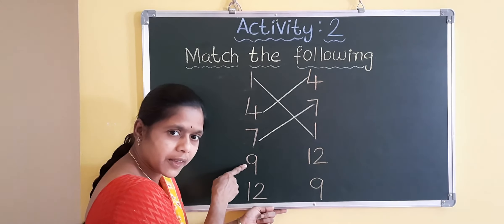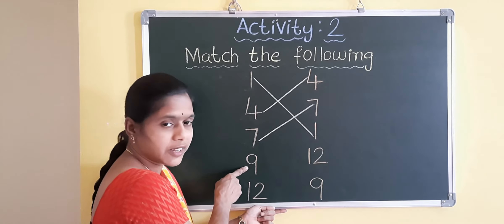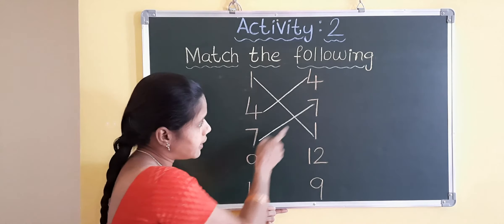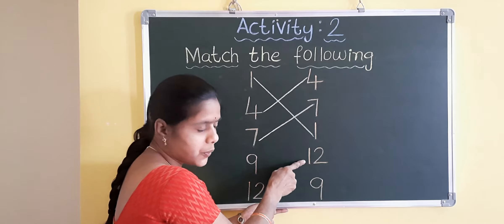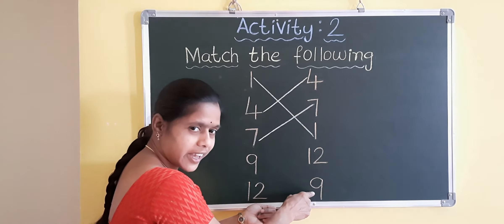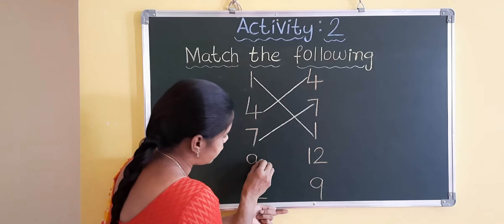Next, which number is this? This is number nine. Right side, where is the number nine? Is it nine? No. Is it nine? Yes. So, match it. Draw the line.